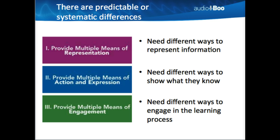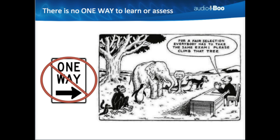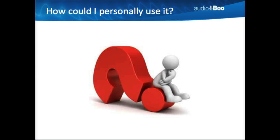Students need different ways to represent information through video clips and hands-on activities, accomplished through providing multiple means of representing a concept. Sometimes students need to show us different ways they know how to do things — they may create a video, a skit, write a paper, or create a PowerPoint — so we need to provide multiple means of action and expression. Students also engage with content differently, so there's no one way to learn or assess. Sometimes we make students line up and assess them all the same way, when each has a different comfort level. Audioboo provides a different way for students to learn and show what they know.